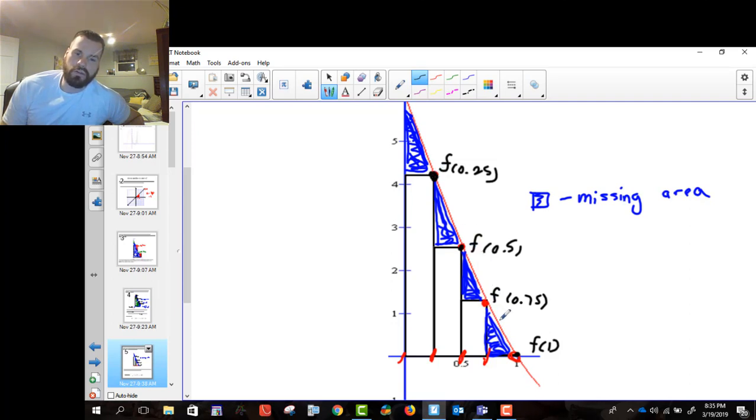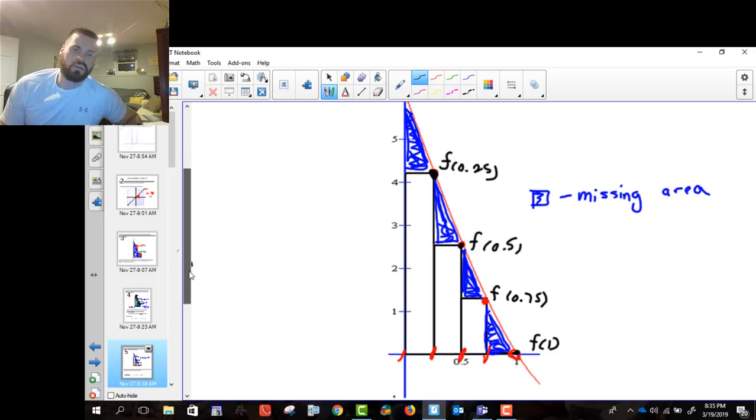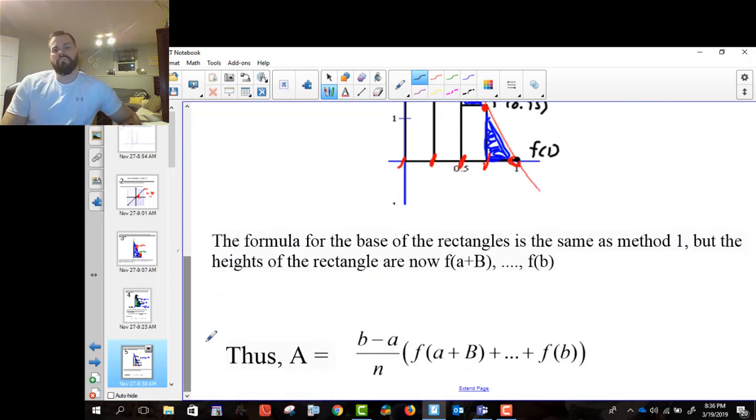But we go, instead of going to 1 minus b, so instead of going to here where we stop with the left ones, we actually go all the way to b. So it looks very similar in terms of its formula. It's just it starts at a plus the base and it ends at f of b.